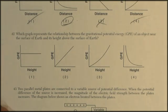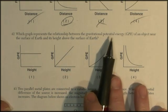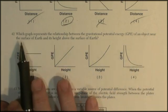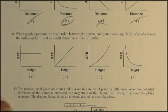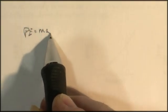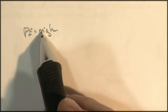Question 42. Which graph represents the relationship between the gravitational potential energy of an object near the surface of the Earth and its height above the surface of the Earth? Let's use the same technique. The first thing we do is to find the formula. We're told that gravitational potential energy is equal to mgh. I remember that. So let's write the formula. Potential energy is equal to m, g, and h.